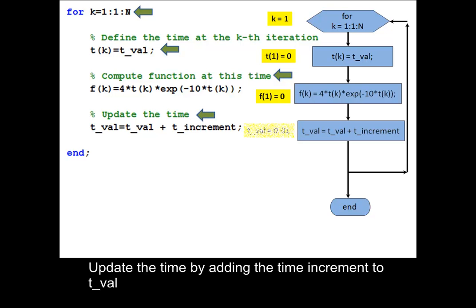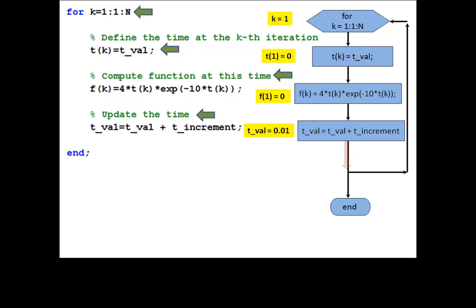Update the time by adding the time increment to tval. Return to the beginning of the loop.